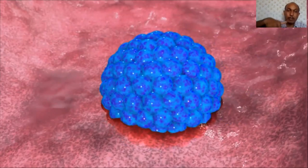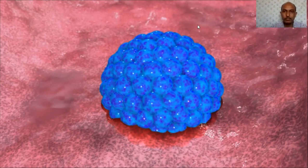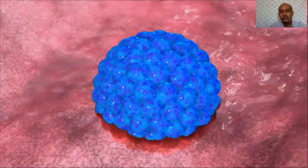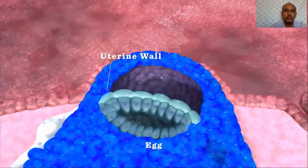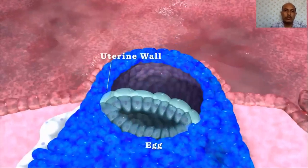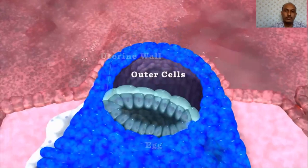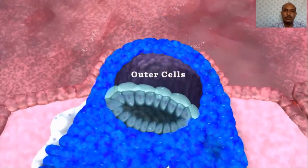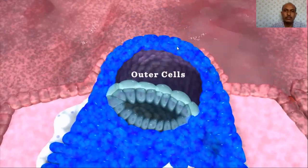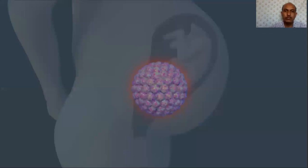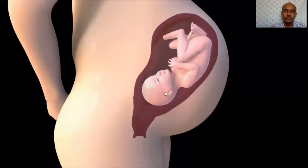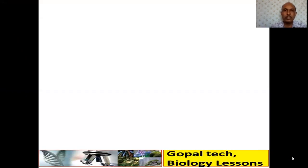On day seven, the ball of cells burrows into the uterine wall — a process called implantation. Mother and embryo contact develops here. Many women experience implantation bleeding or spotting around this time, about 21 days after a period, before a pregnancy test could even be positive. The cells on the outside create the yolk sac and placenta. By 38 weeks, the fertilized egg has grown into an infant with more than 2 trillion cells.